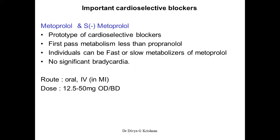Now we'll look at some important cardioselective beta blockers and their prominent pharmacokinetic features. Metoprolol and its S-enantiomer S-metoprolol are considered the prototype of the cardioselective beta blockers, just as propranolol is the prototype of non-selective beta blockers. First-pass metabolism is less than propranolol, and individuals can be fast or slow metabolizers of metoprolol due to genetic variation. This drug will not cause significant bradycardia, though it does decrease heart rate by blocking beta-1.